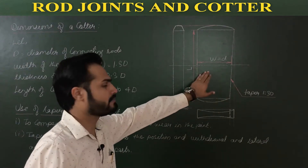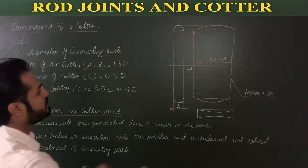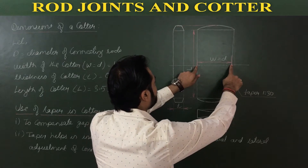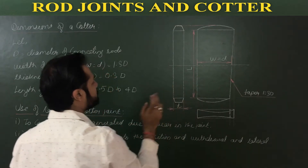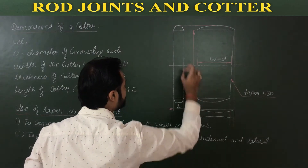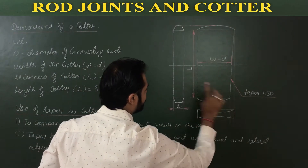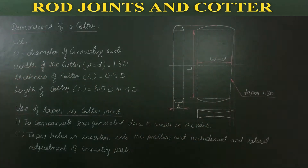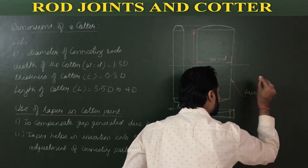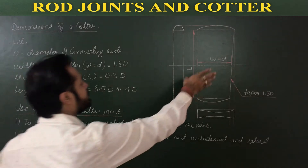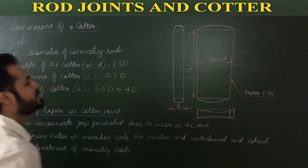These are three views: front view, side view, and top view of the cotter. W equals d is the mean width of the cotter, L is the length, and small t is the thickness of the cotter. Additional height and curved ends will be given in the problem statement. Basic standard dimensions are W, T, and L. The taper is 1 in 30, generally provided on one side of the cotter.